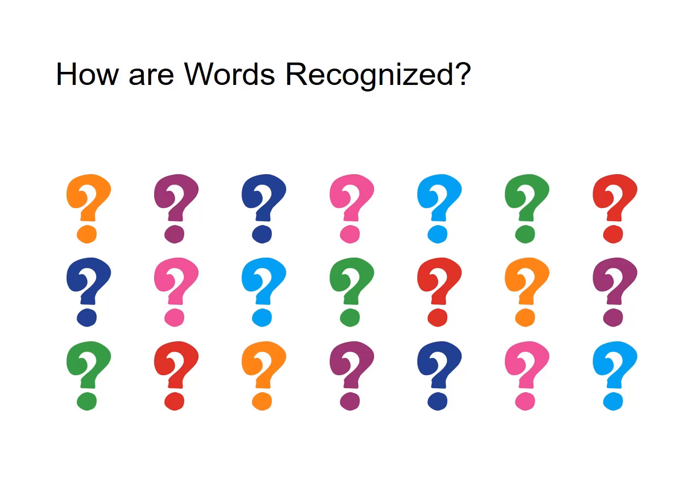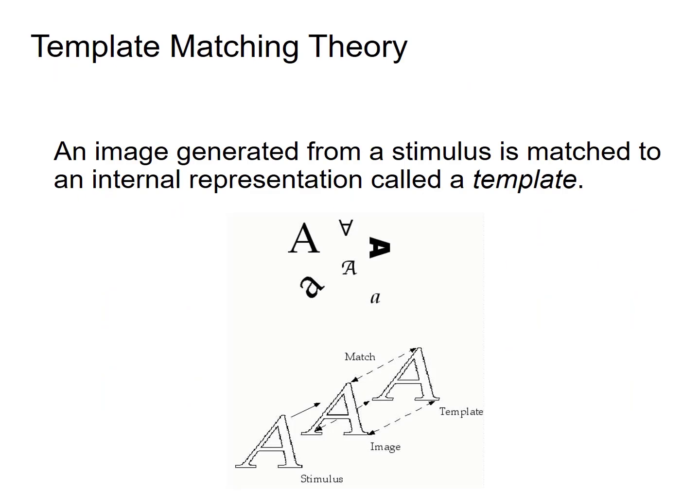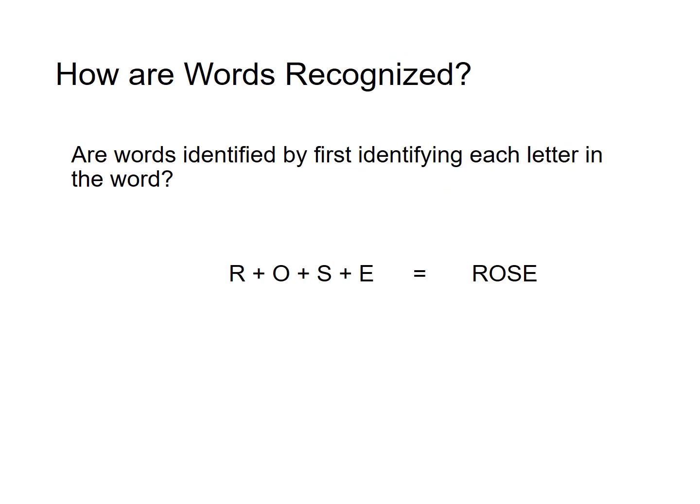You may have wondered, how are words recognized? A very simple way to think about it is template matching. You take the input that you see and you're going to match it to memory until you find a complete match. But the question is, do you match letters one at a time to find a word in memory? If your template matching process involves matching each letter one at a time, you first identify R, then O, then S, then E, and then discover that those letters together make up the word rose.